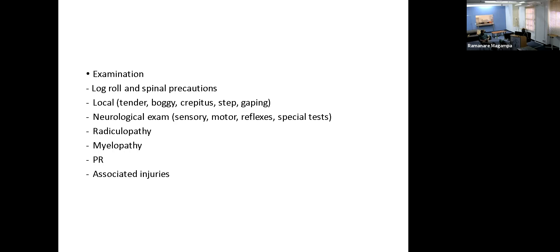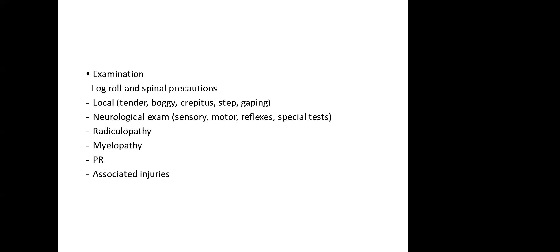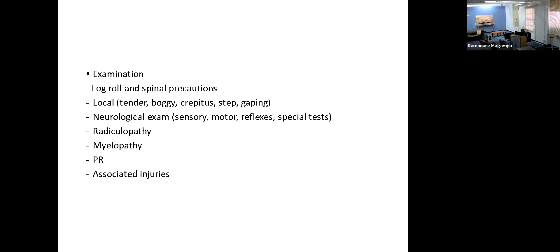Assessing a patient with spinal cord injury includes doing a PR, and while doing the PR you can do the bulbocavernosus reflex. That's specifically for patients who have a central spinal cord injury. You do a PR and either squeeze the glans or pull on the catheter — there should be a corresponding anal contraction. If that doesn't happen, the patient is in spinal shock. While the patient is log-rolled, I feel all the way from the top of the spine down, do the PR and bulbocavernosus at that moment, then flip the patient back.